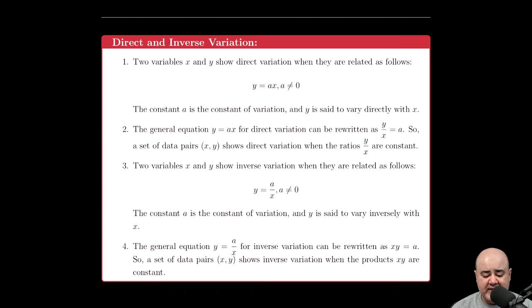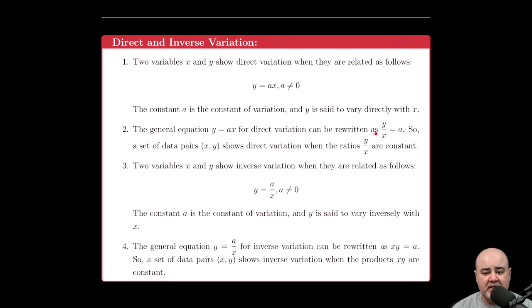If this relationship is true, we say that y varies directly with x. The general equation y = ax for direct variation can also be rewritten as y/x = a. Consider what happens if we divide both sides by x. This x will go over, yielding y/x. And ax divided by x—the x's will cancel out, leaving just a behind.